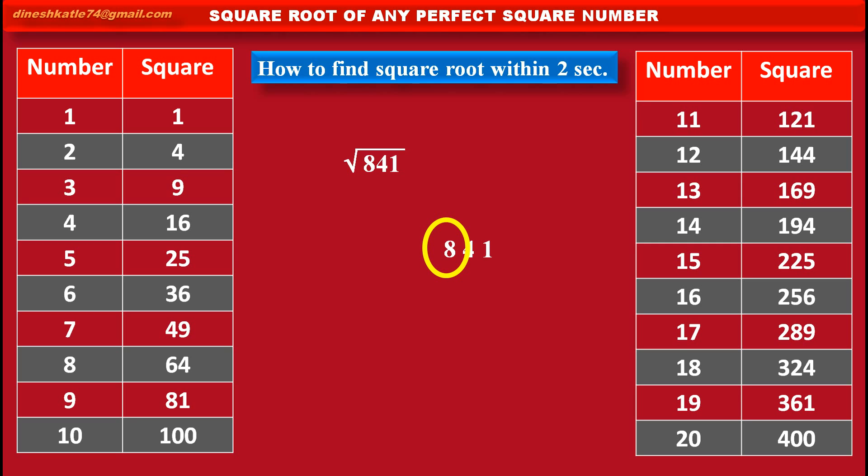Now, see the given tables. The perfect square number before 8 is 4, and square root of this number 4 is 2. So, the first digit in the square root is 2.